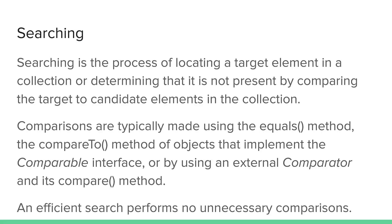Searching is the process of locating a target element in a collection or determining that it's not present by comparing the target to candidate elements in the collection. Comparisons for equivalence are typically made using the equals method, the compare-to method for objects that implement Comparable, or an external comparator. Regardless of the method used, we always want to perform the fewest possible number of comparisons to find the object for efficiency.